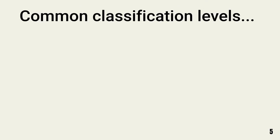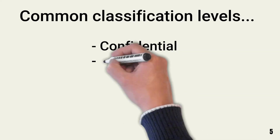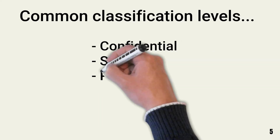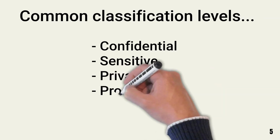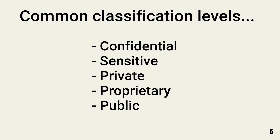The classification labels applied differ across industries and organizations. A common classification method for commercial organizations includes the levels confidential, sensitive, private, proprietary, and public.